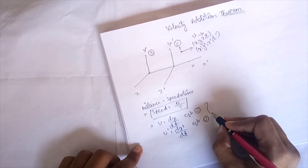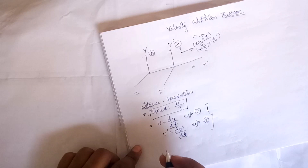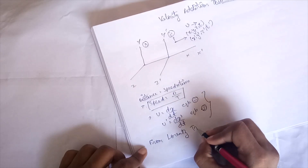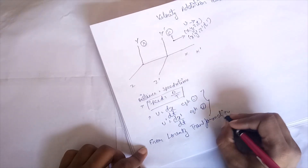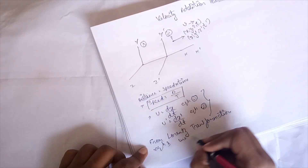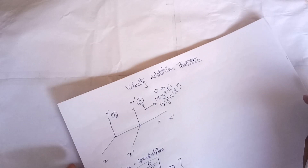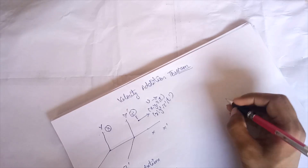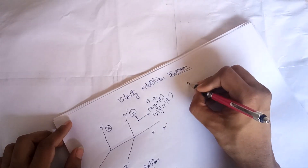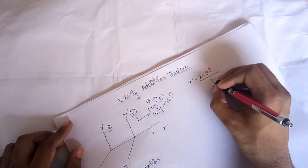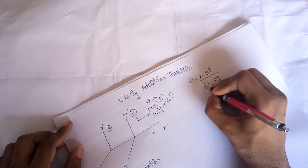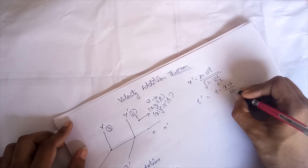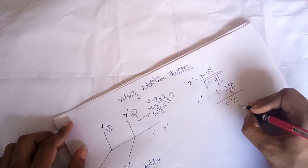This is the first step. Moving forward, from the Lorentz transformation equations we have: x-dash = (x − vt) / √(1 − v²/c²)  — equation 3 — and t-dash = (t − xv/c²) / √(1 − v²/c²)  — equation 4.